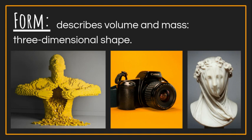Three-dimensional items have length, width, and height — that's why it's called three-dimensional. Length is a dimension, width is a dimension, height is a dimension. Put all three together, you get something that has volume and takes up space, and that's form.